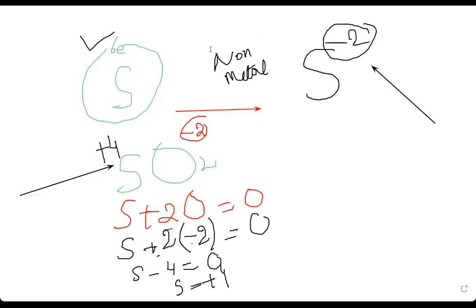For exam questions, they will give you an equation — for example, nitrogen and hydrogen together giving ammonia — and you have to check what is getting oxidized and what is getting reduced by checking their oxidation states. Sometimes elements do not follow their standard valency. For example: magnesium plus O₂.